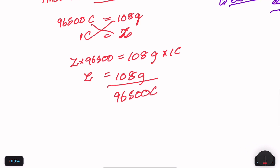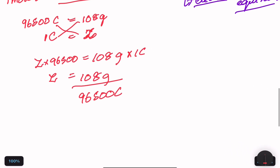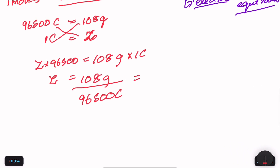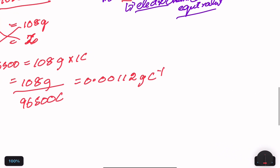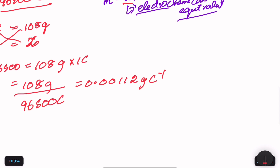Dividing 108 by 96,500 gives z equals 0.00112 grams per Coulomb inverse. This is the electrochemical equivalent of silver.